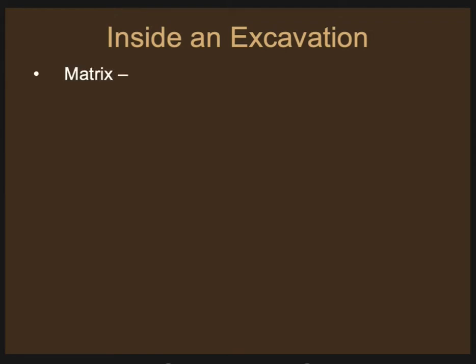In excavation, there are several crucial parts. There's the matrix — this is what you would record as the soil. You would want to record the exact location of everything that you find. This is known as provenience. So you might say it was found on these coordinates, X and Y, and it was found this many centimeters below the surface.